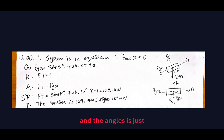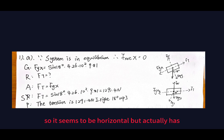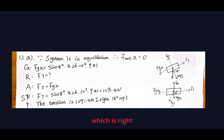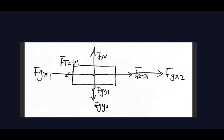The angle shown seems horizontal because of the relabeled axes, but it actually has a slight incline — the same as the slope incline — pointing right and 18 degrees upward. Now let's take a look at the second question.